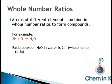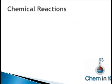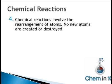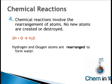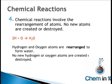More than that, these particular whole number ratios, such as 2 to 1 hydrogen to oxygen in water, give water its identity. In chemical reactions, atoms are rearranged — they're neither created nor destroyed. So in our example, 2 hydrogen atoms plus 1 oxygen atom yields water. Notice how hydrogen and oxygen atoms are rearranged to form water, but we haven't created any new hydrogen or oxygen atoms, nor have we destroyed any old ones.